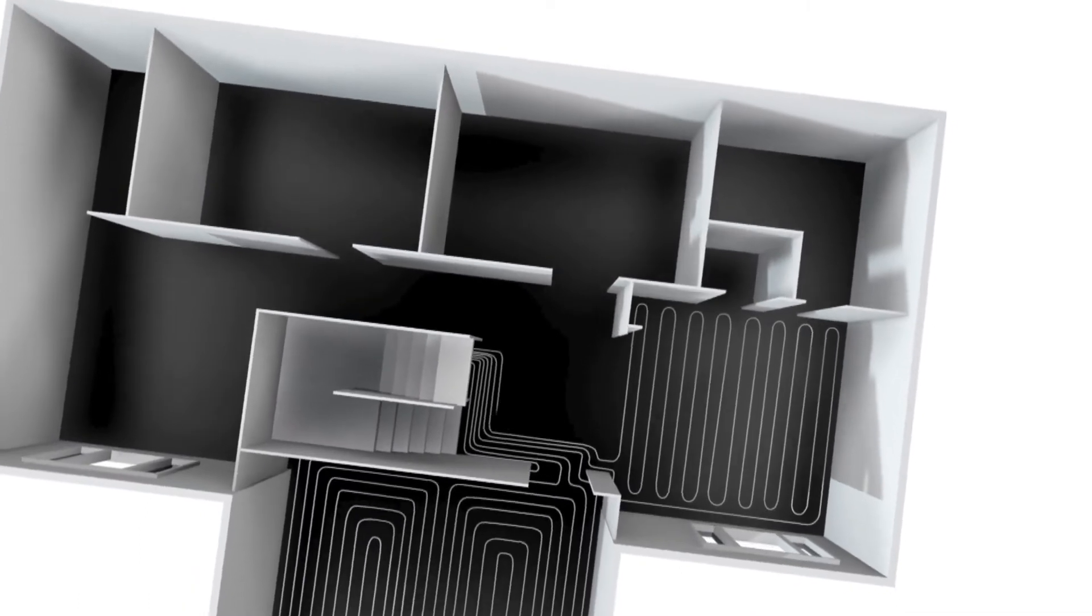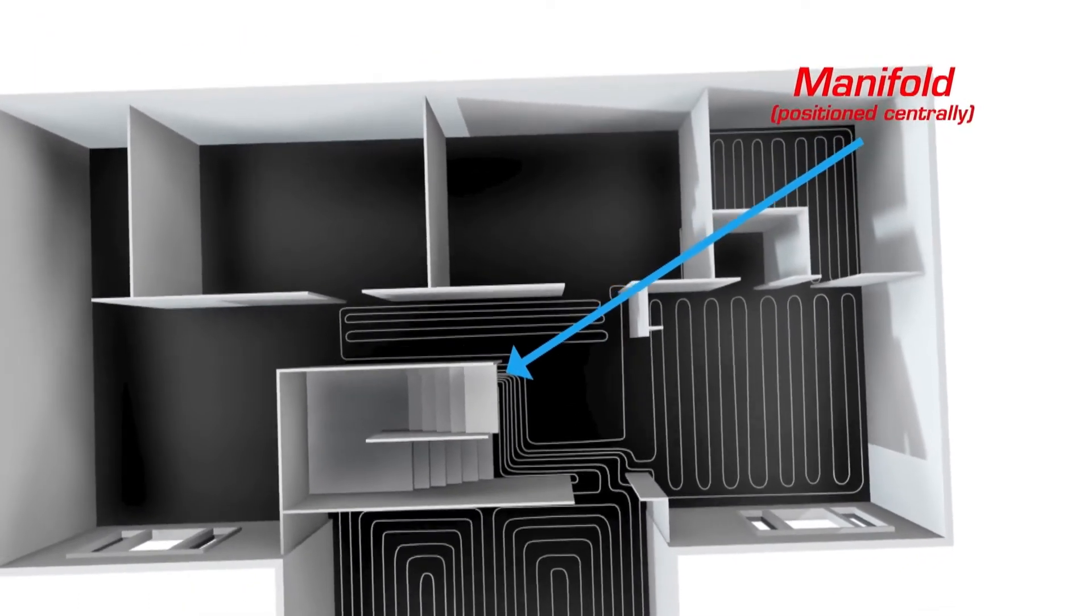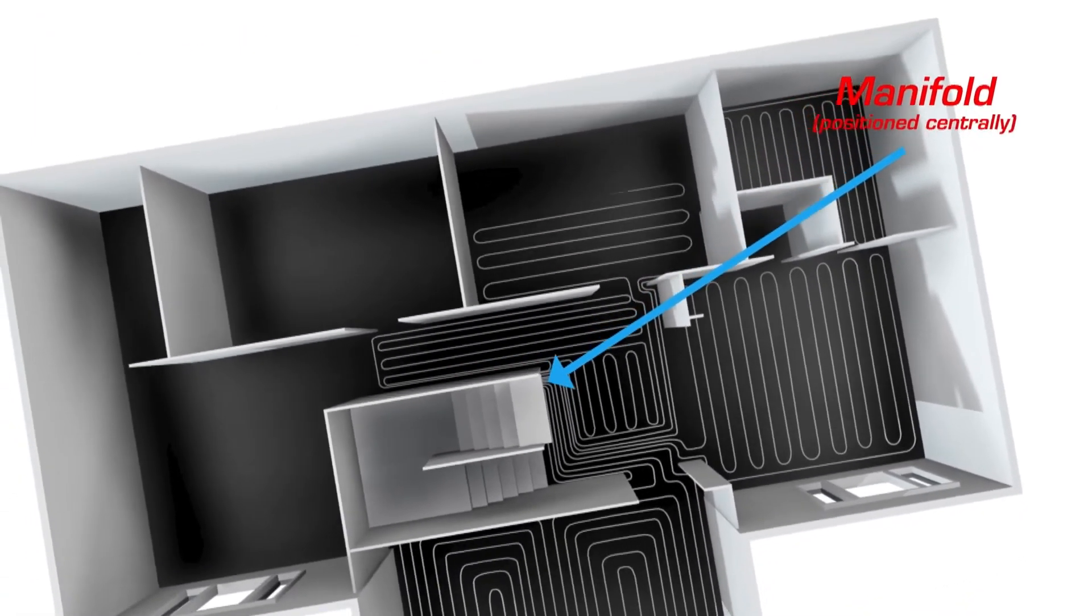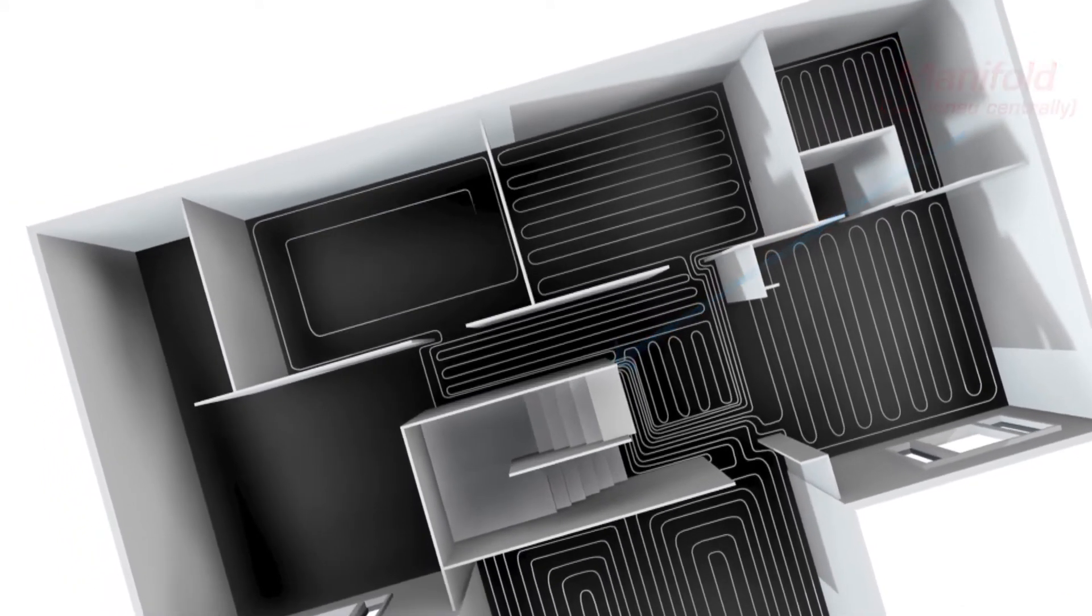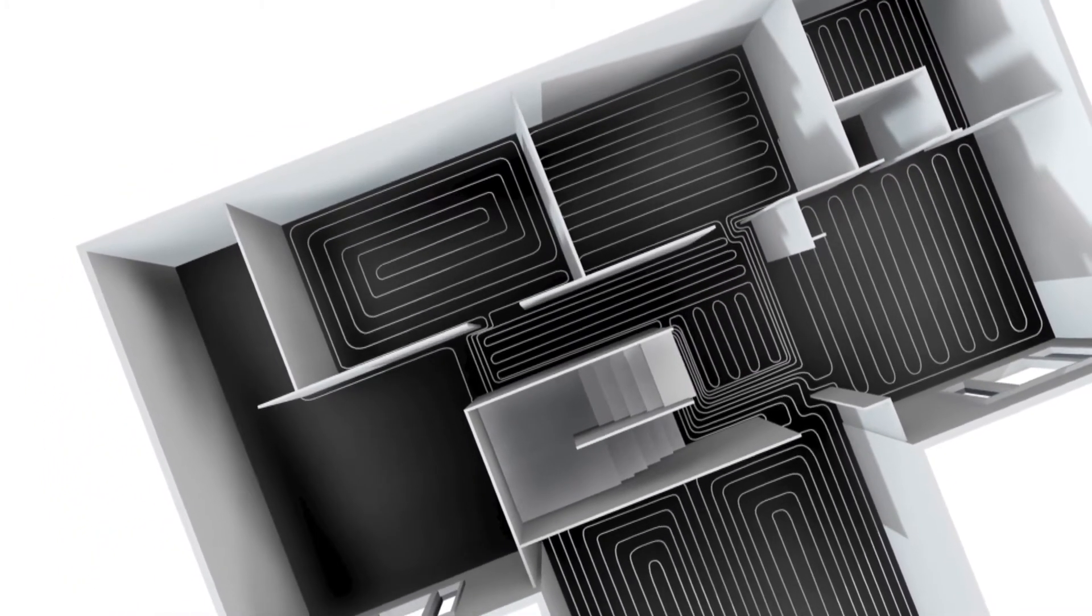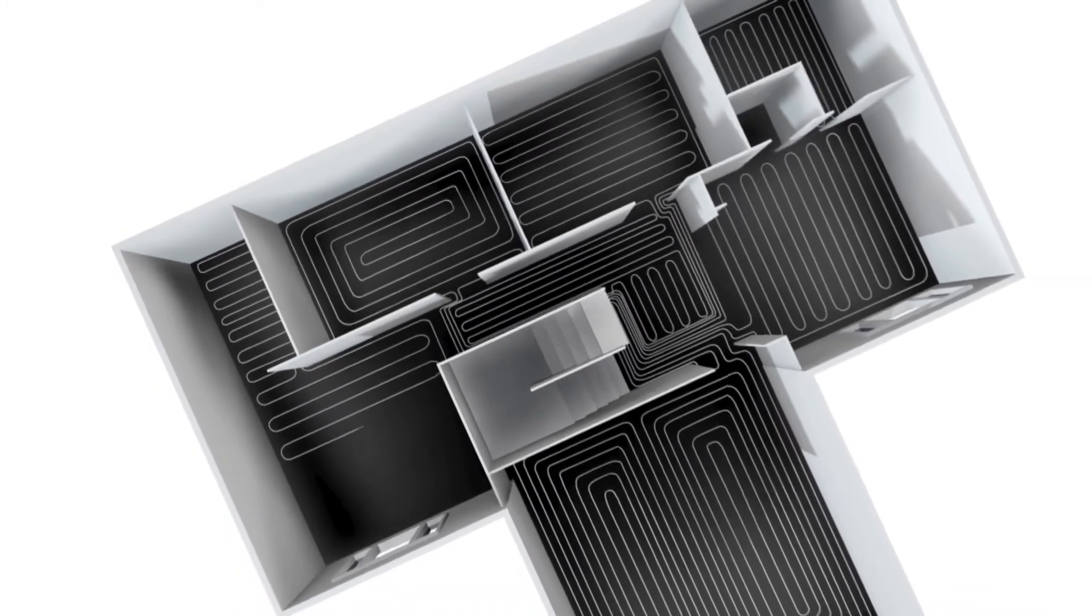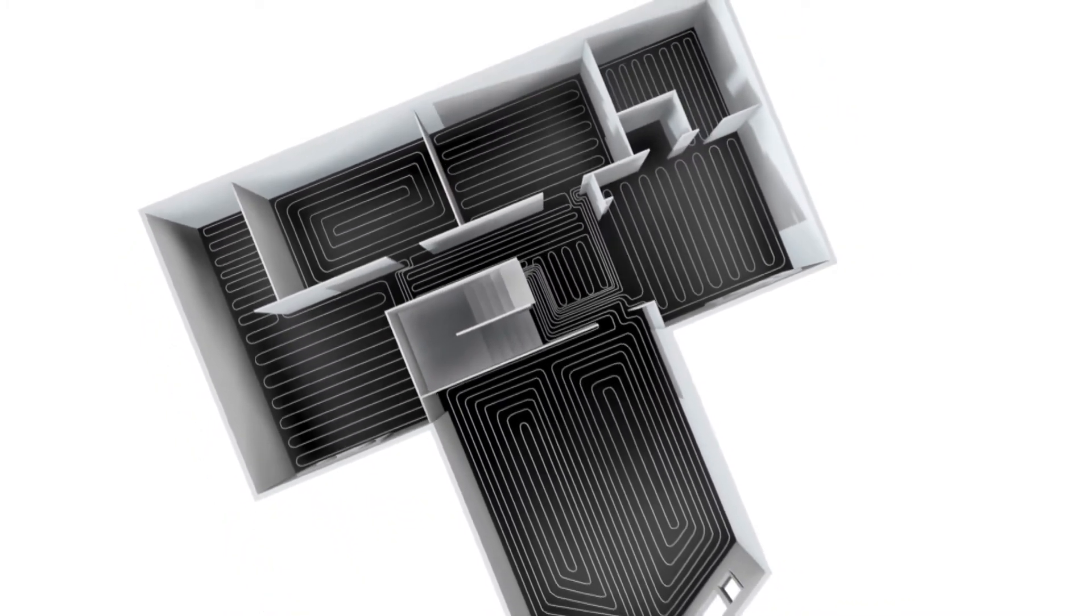Placing the JG manifold centrally to the circuits will greatly reduce the amount or length of circuits needed for a particular installation. This will have a bearing on the cost and performance of a system as well.